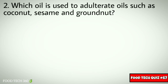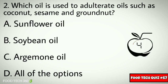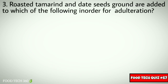Question number two: which oil is used to adulterate oils such as coconut, sesame, and groundnut? Options: A) sunflower oil, B) soybean oil, C) argemone oil, D) all of the options. Correct answer: C) argemone oil.